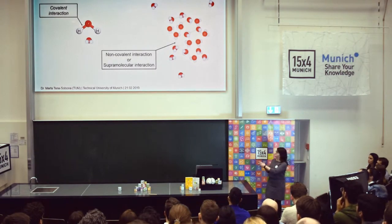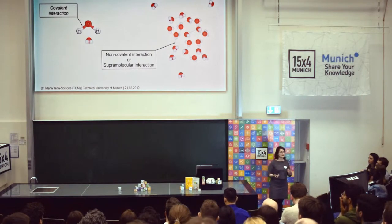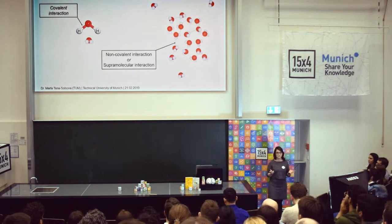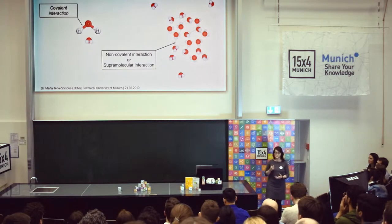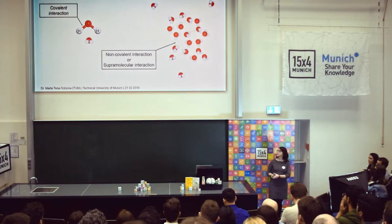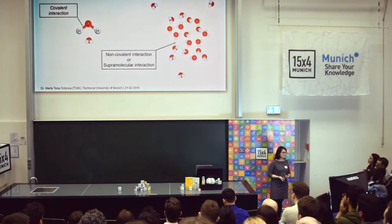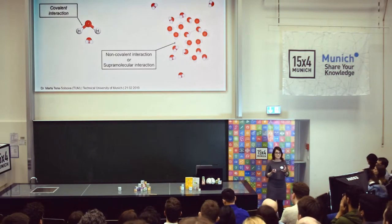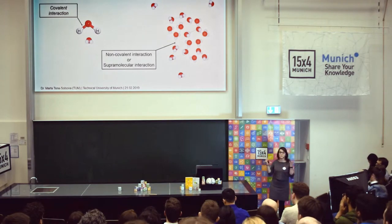A covalent bond means that these two atoms are actually sharing electrons on the outer shell, and this electron sharing makes this bond extremely, extremely powerful. For our purposes, I will just consider these covalent bonds non-reversible. But these are not the only interactions that hold water together as we know it.